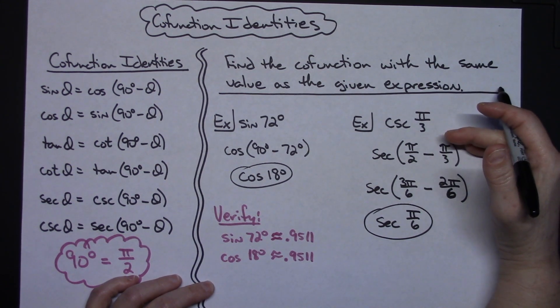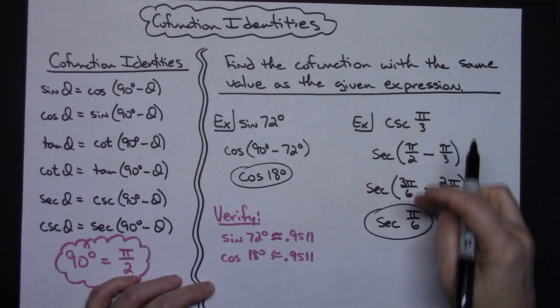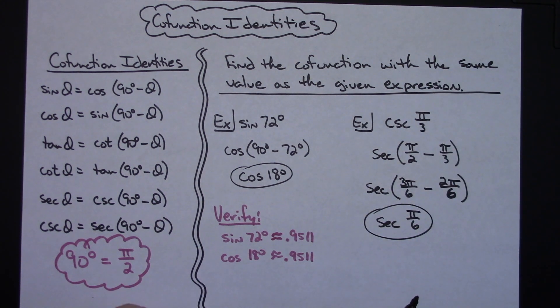And again if you put your calculator in radian mode and plugged both of those in you would get the same decimal. So just a really short introduction into how you can find a cofunction, and the fact that it gives you an equivalent expression.